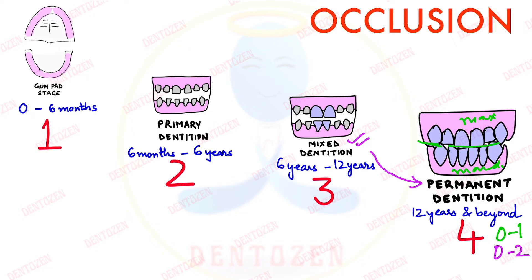Now in the permanent dentition, when we look at the occlusal surfaces — that is the surfaces of the teeth where they contact opposite teeth — and if we try to join these surfaces and draw a line at these surfaces, we'll get a plane which is known as the occlusal plane.